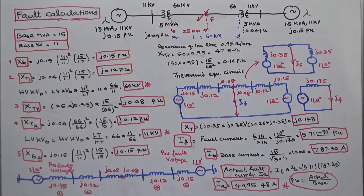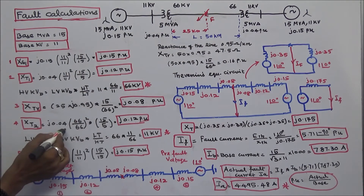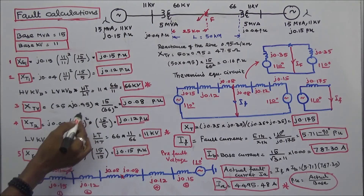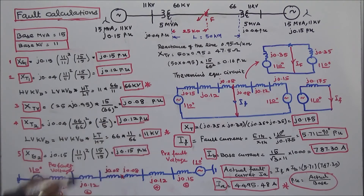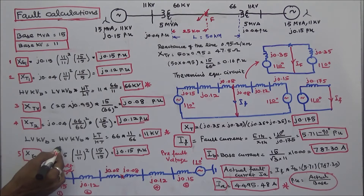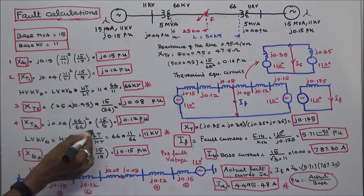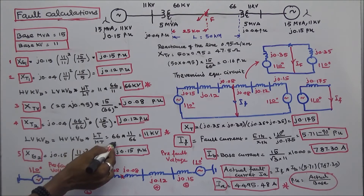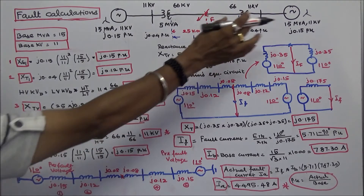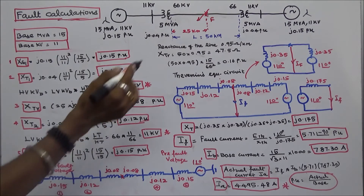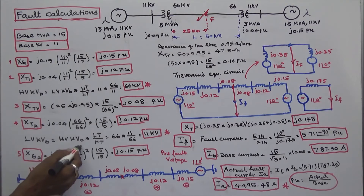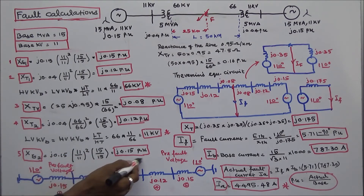For Transformer 2, the given value is J.04 × (66/66)² × (15/5) = J.12 per unit. Next, the low-voltage KV base equals high-voltage KV base × (LT/HT) = 66 × (11/66) = 11 KV. For Generator 2, the given reactance is J.15 per unit. Applying (11/11)² × (15/15) = J.15 per unit.